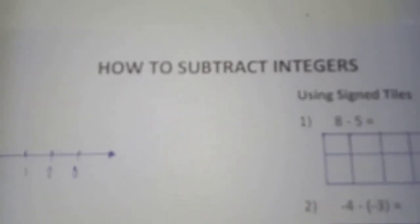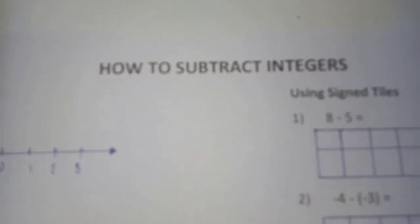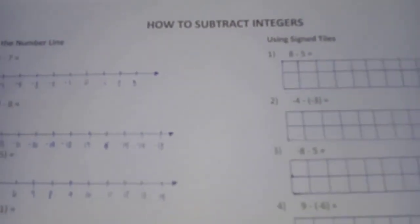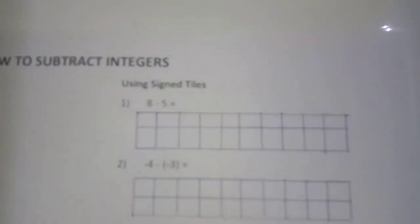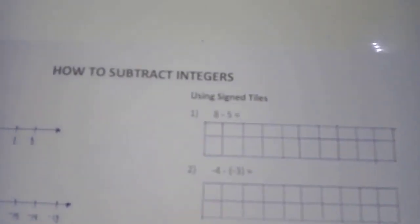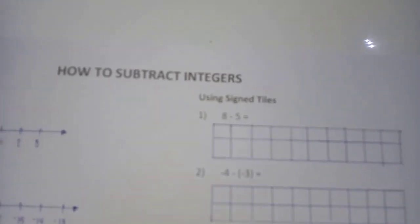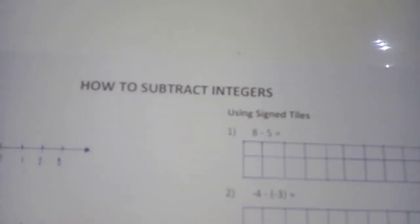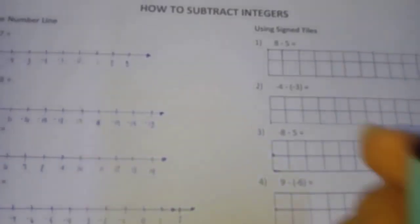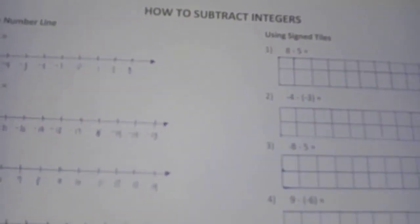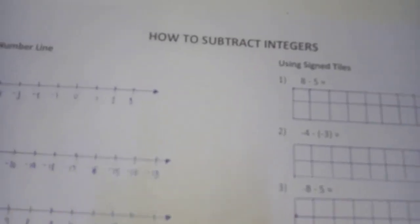Good day, welcome to our 14th topic: how to subtract integers. We have two ways here — using the number line and using signed tiles. We know that addition and subtraction are opposite processes, which implies that any subtraction problem can be rewritten as an addition problem using opposites.